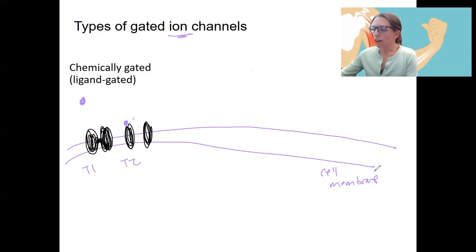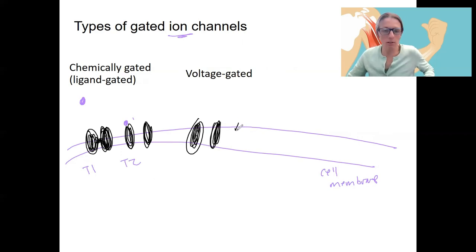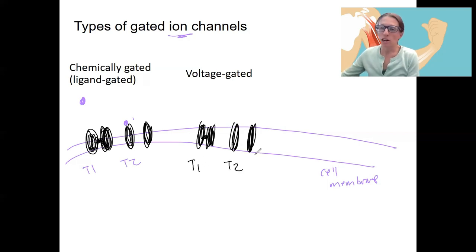Then we can have a voltage gated channel. This is when we'll have T1 and T2 again. That should be closed. So this channel is closed. This channel is open. What causes it to open? A change in voltage. This is a little bit harder to think about. We'll see it again.